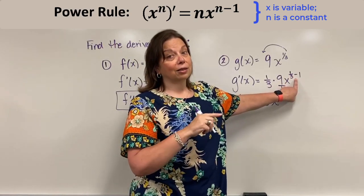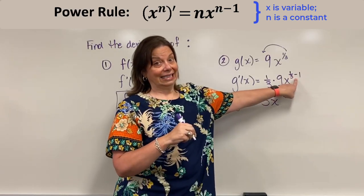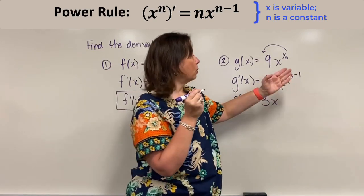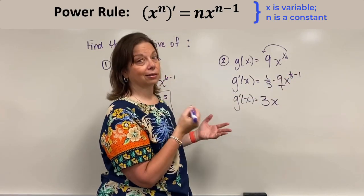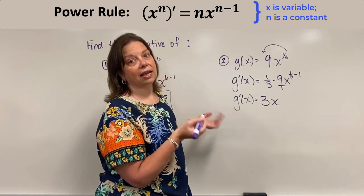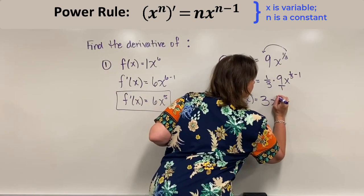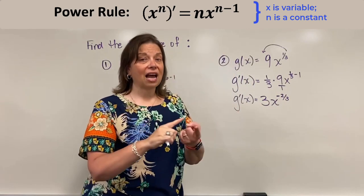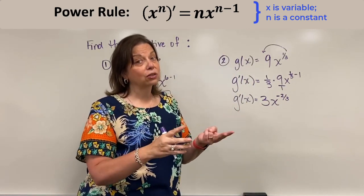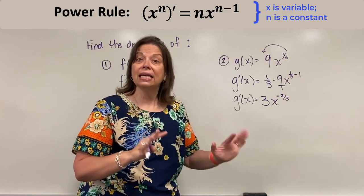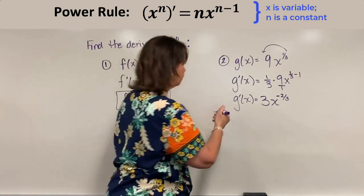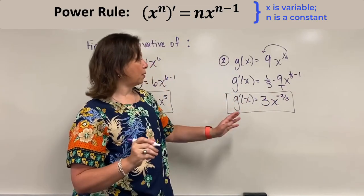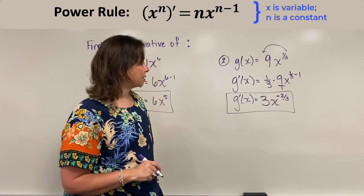what is 1 third subtract 1? You can work that to the side if you need. What's happening is 1 third minus 3 thirds, which is negative 2 thirds. So my new power is negative 2 thirds. It's perfectly fine to have a power that's a fraction and also negative — you don't have to do anything special to it. This is a perfectly reasonable function. And I'm going to box this to say we are done finding the derivative of g of x.